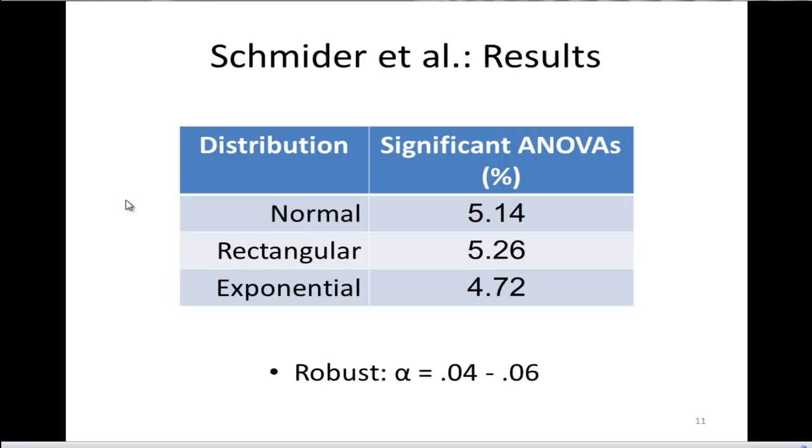So you would conclude that the ANOVA is robust even when you have data that have skew of 2 and kurtosis of 9, because it falls within the range of 0.04 and 0.06. In fact, it's quite a trivial difference from 5%, which is the theoretical percentage you would expect to see. It's equal to 4.72, that's totally fine.